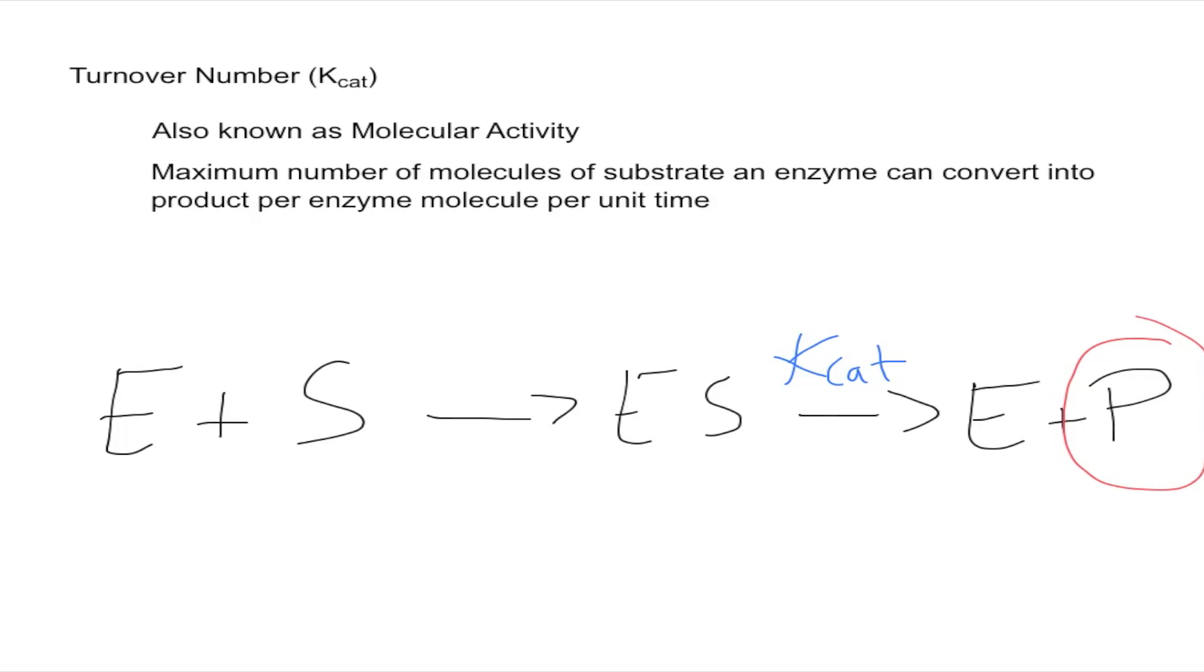For this part right here, per enzyme molecule, if we have one enzyme, how many products can we form in a given amount of time, or per given amount of time, out of the available substrate? Let's look at an example.